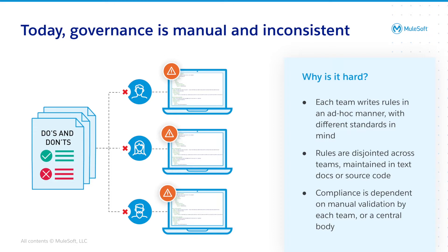Secondly, the majority of the time rules are not centrally maintained, meaning they are actually maintained either in text documents or even within source code itself. This means it's even harder for teams to keep track of what rules they need to follow. Lastly, compliance is often dependent on manual validation, as someone in a team or central body is in charge of reviewing the API spec.